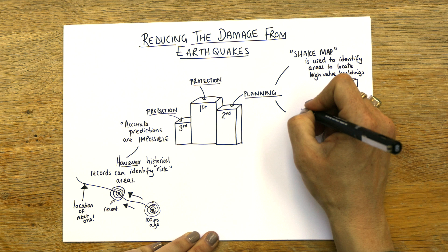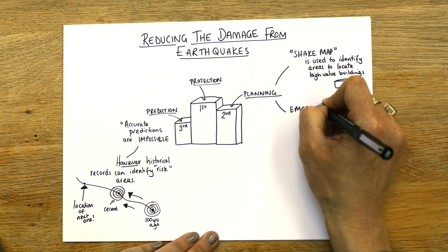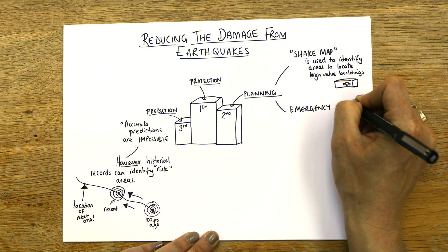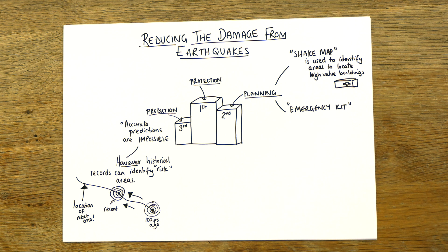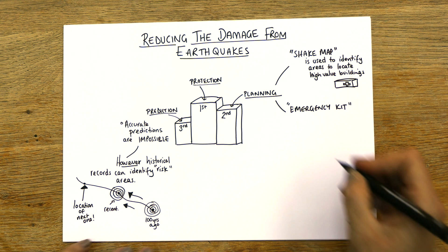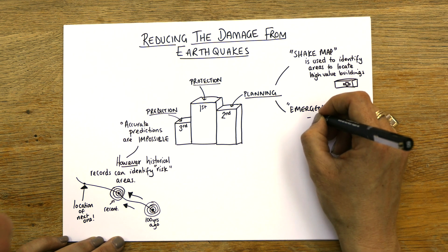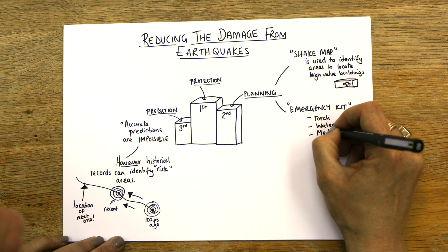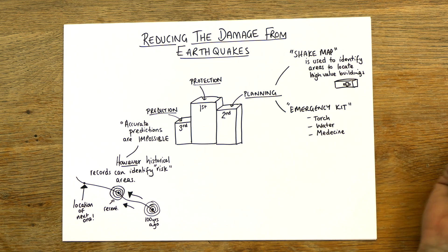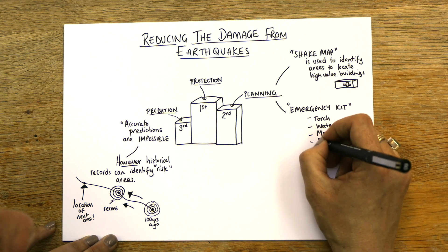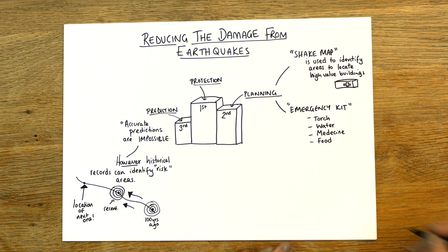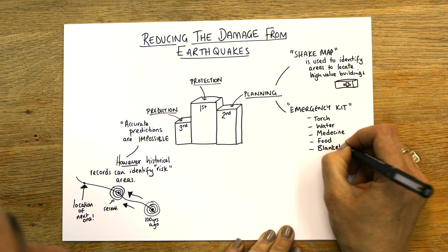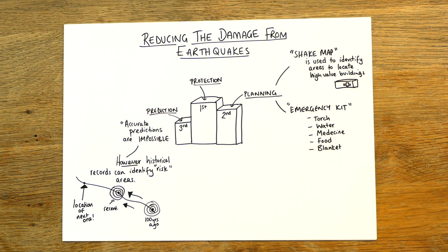The next thing is an emergency kit. I know that if I lived in an area that had earthquakes, I would have this kit made up — in a bag in my car so it was with me. I would have things like a torch, because electricity goes down; water; some medicine, even paracetamol; some food like protein bars; and a blanket. Basically, in that kit I would have what I needed in the event of an emergency, and that's a planned thing — I've planned it, packed it, and it's ready to go.